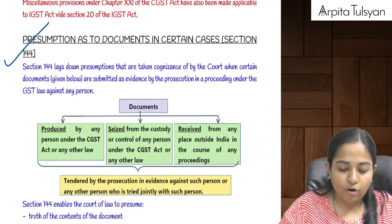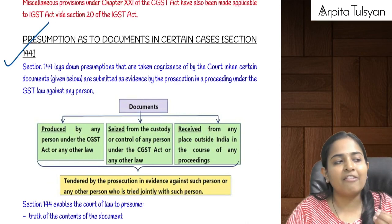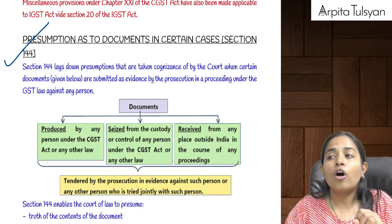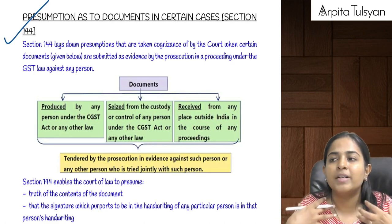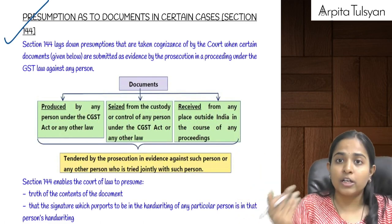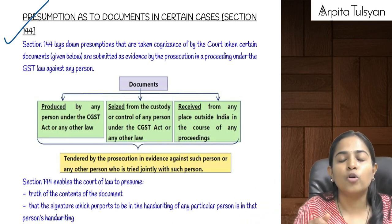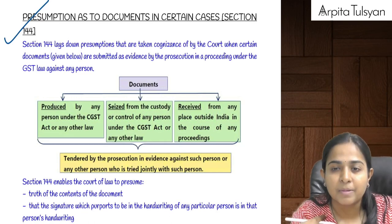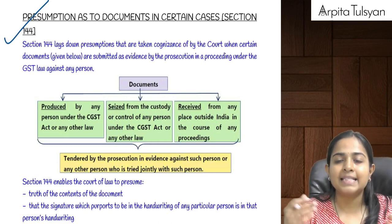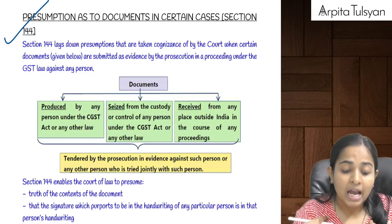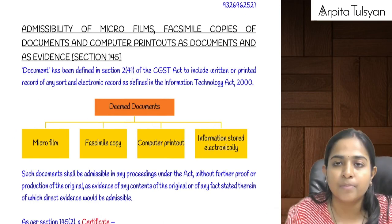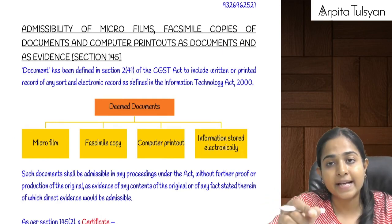Section 144 talks about presumption as to documents. Whatever documents have been produced by any person under this law, seized from anyone's custody, or received from outside India — if those documents relate to me and have been produced in the court of law, it will be presumed that those documents belong to me if they have my signature, handwriting, or any of my details, unless proved to the contrary. Those documents can be used as evidence against you.